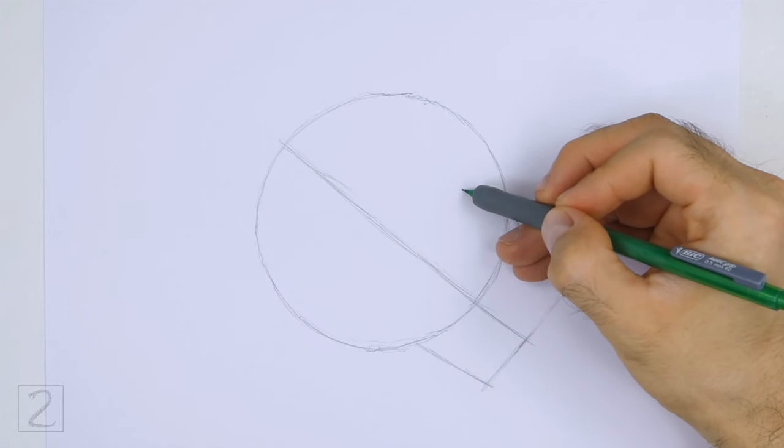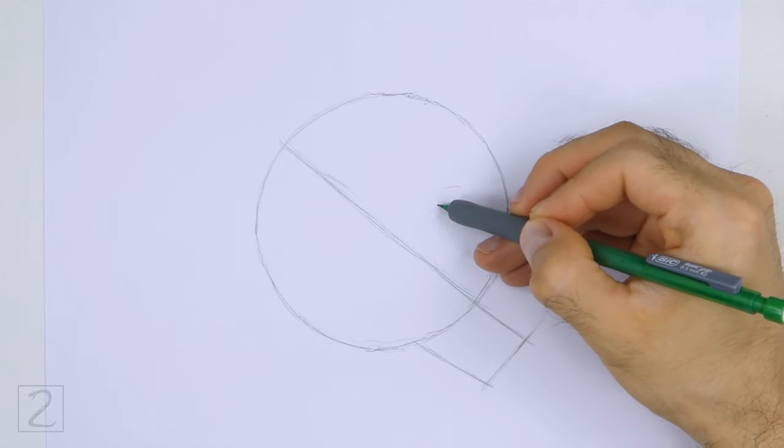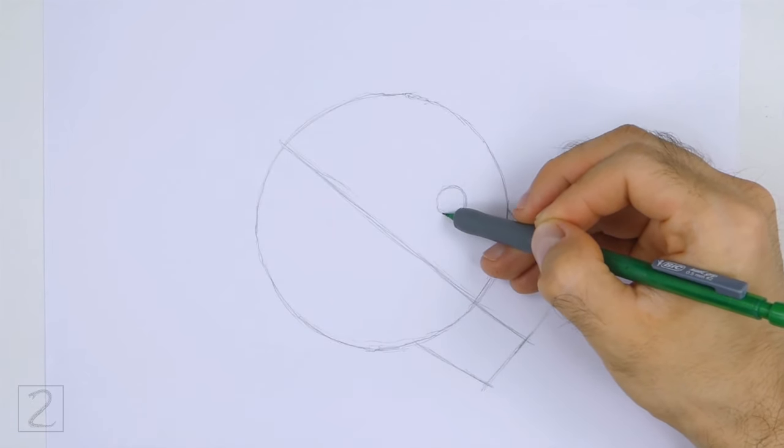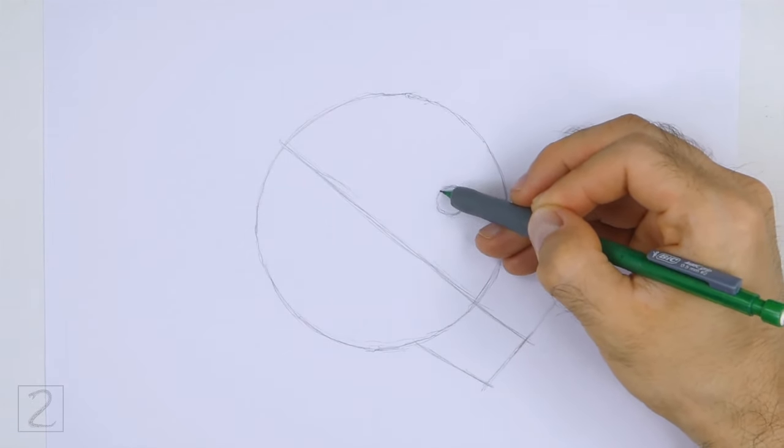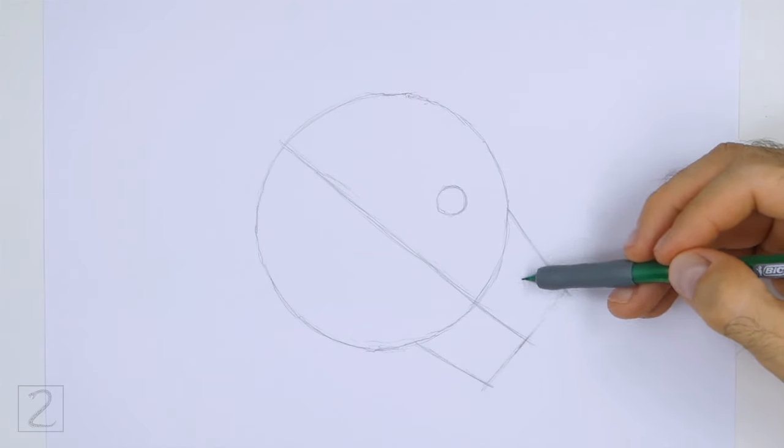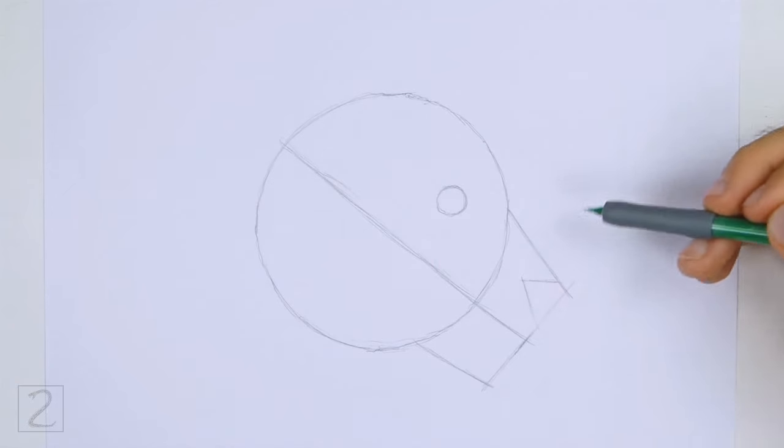Inside the head, on the top right side, draw a small circle for the eye. The eye should be small in relation to the head. Inside the muzzle, draw two short lines as guides for the nose. These lines should form a shape similar to a triangle.